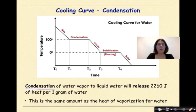Condensation of water vapor to liquid water will release 2260 joules of heat per 1 gram of water. This is the same amount, in case you were thinking, wow, that number sounds really familiar. It's the same amount as the heat of vaporization for water that you would find on table B of your reference tables.